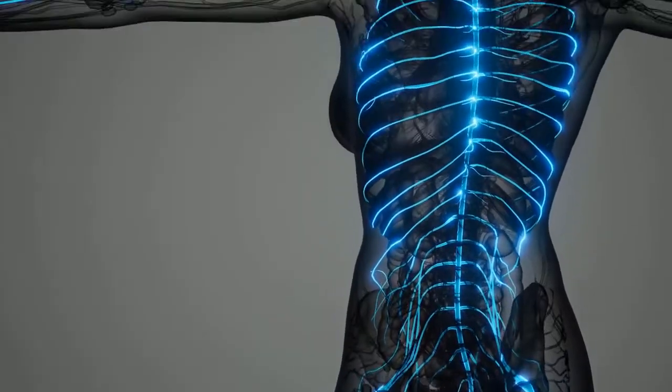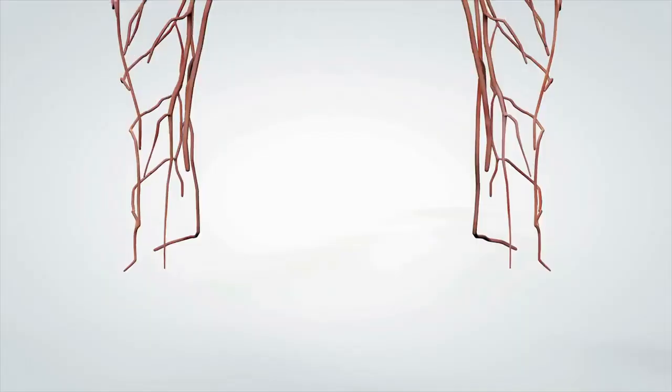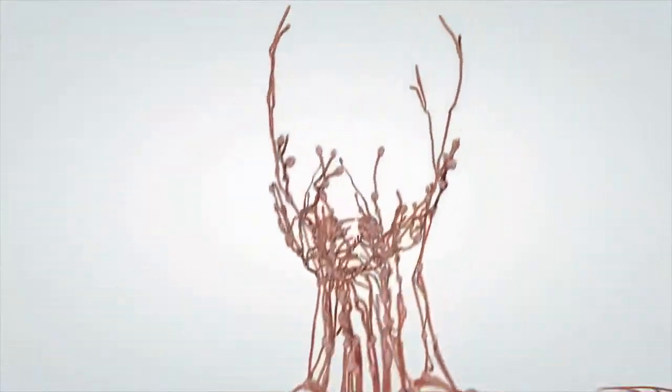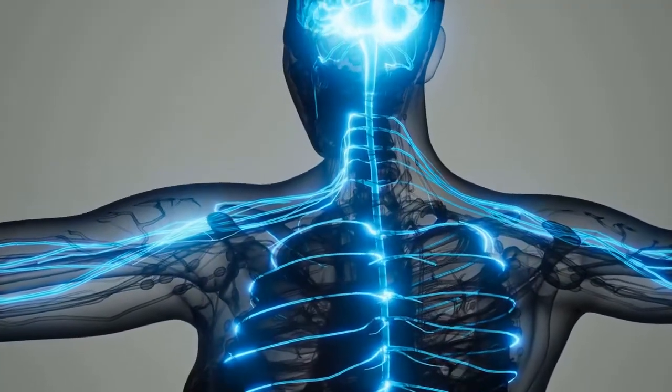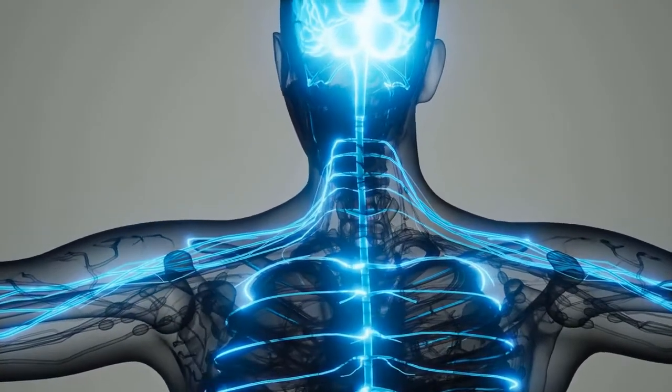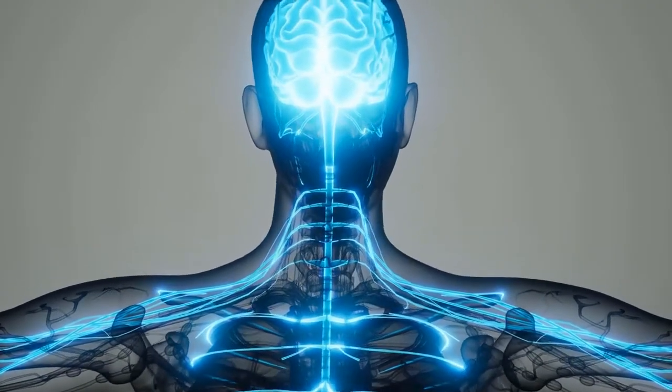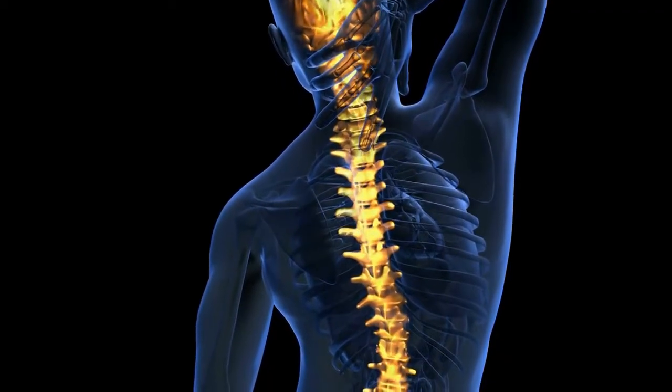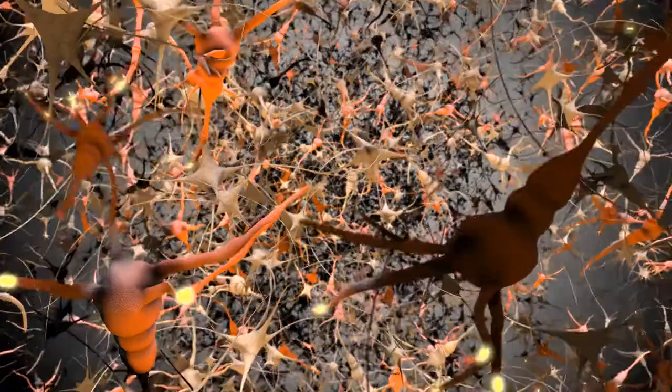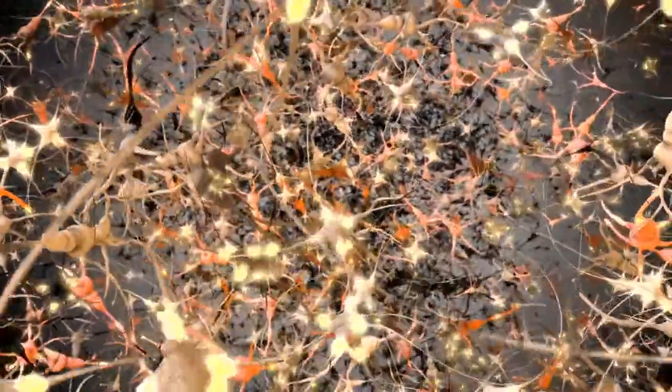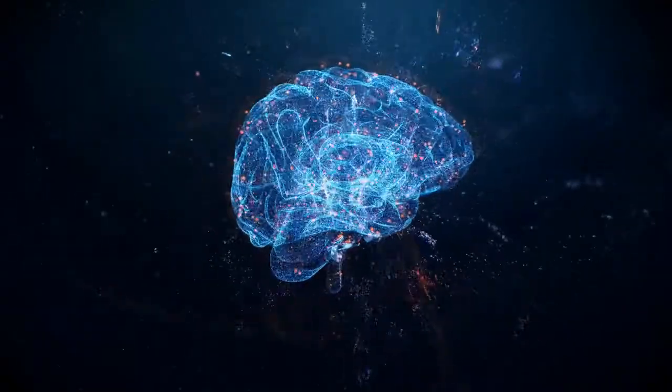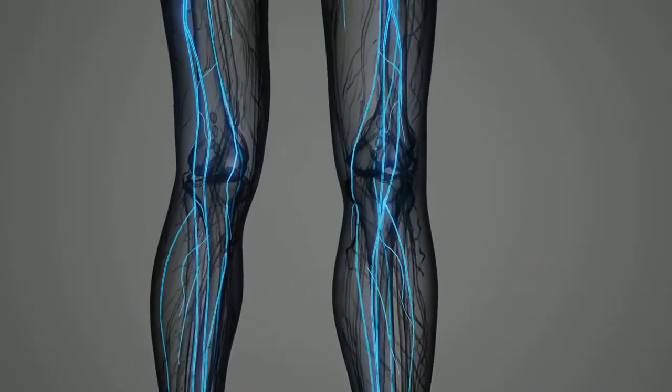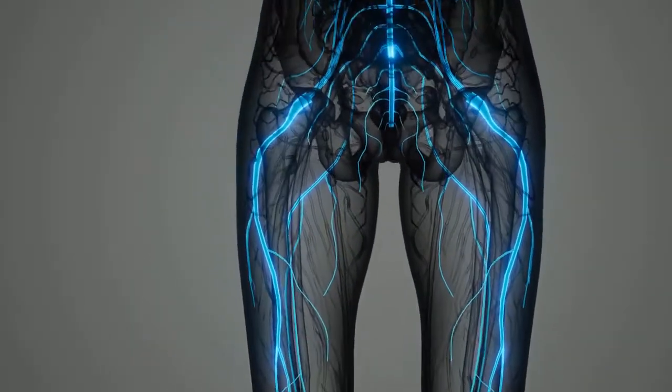The nervous system is responsible for controlling and coordinating all the functions of the body. It includes the brain, spinal cord, and nerves, and it receives and sends signals throughout the body. The nervous system is responsible for everything from our reflexes to our thoughts and emotions.